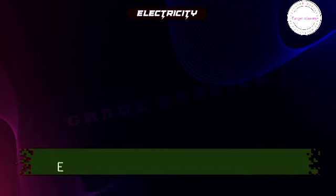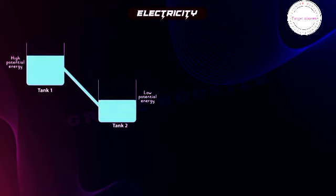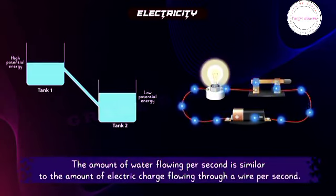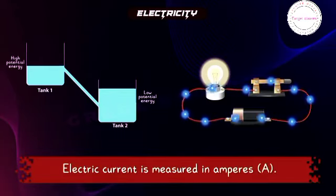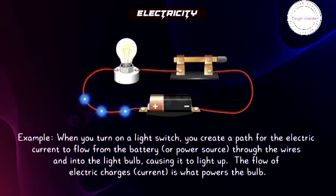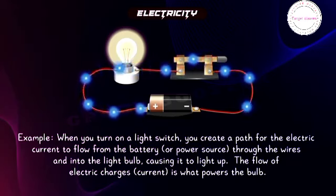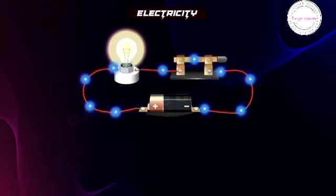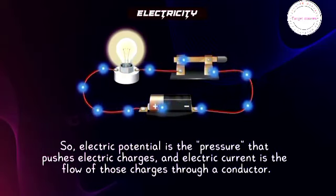Electric current is the flow of electric charges through a conductor. Going back to the water tank example, electric current is like the flow of water through a pipe — the amount of water flowing per second is similar to the amount of electric charge flowing through a wire per second. Electric current is measured in amperes. When you turn on a light switch, you create a path for the electric current to flow from the battery through the wires into the bulb, causing it to light up. So electric potential is the pressure that pushes the electric charges, and electric current is the flow of those charges through a conductor.